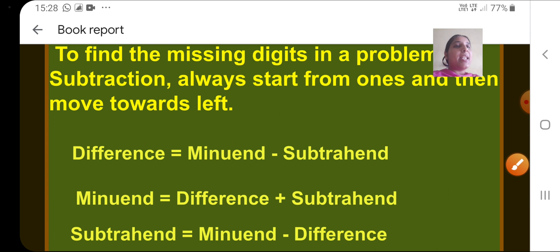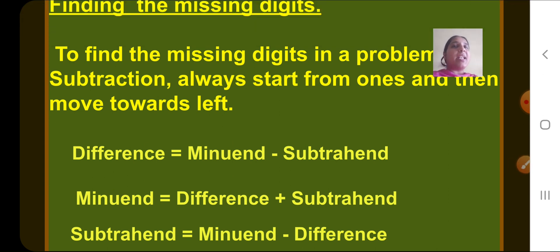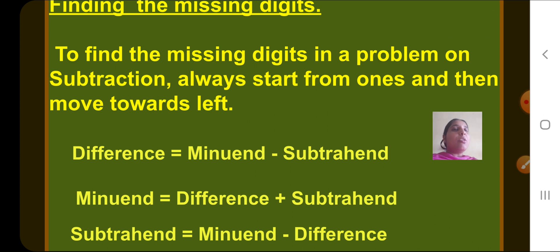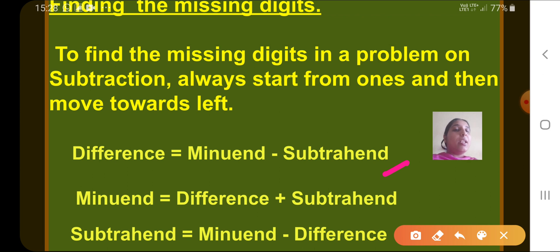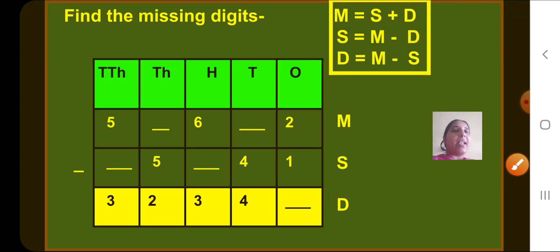Now let's see how to find the missing digits. To find missing digits in a subtraction problem, we always start from the ones place and move towards the left. We know that difference equals minuend minus subtrahend. To find the minuend, we add the difference and subtrahend. To find the subtrahend, we subtract the difference from the minuend.